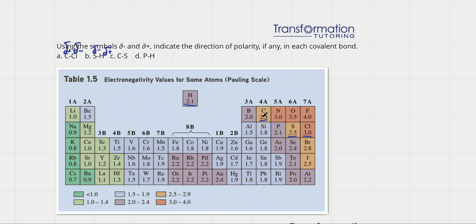Now carbon and sulfur. Carbon is 2.5 and sulfur is 2.5 also. Since they have the same electronegativity, neither one of them is pulling stronger. They're sharing their electrons equally, so we will not show delta negative and delta plus because this bond is non-polar.